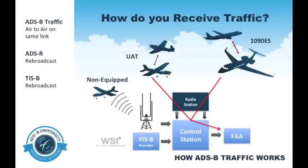TIS-B will allow an ADS-B equipped aircraft to see non-ADS-B equipped aircraft, as long as that non-ADS-B equipped aircraft is currently in radar coverage. The amount of information you receive on that non-ADS-B target will be substantially less, but you will still be provided with some basic data.